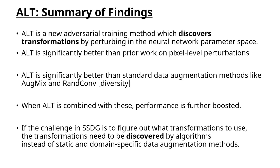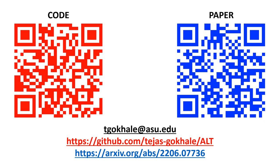In summary, ALT is a new adversarial training method which discovers transformations by perturbing the neural network parameter space, and is significantly better than prior work on pixel-level perturbations, as well as boosting performance of standard data augmentation techniques. If the challenge in SSDG is to figure out what transformations to use, we show that the transformations discovered during training are more effective. Please refer to our paper and consider using ALT as a baseline for future work on domain generalization.